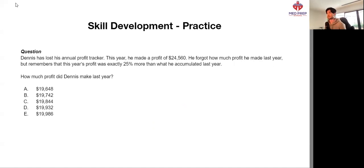Last but not least, another question with Dennis. Dennis has lost his annual profit tracker. This year, he made a profit of 24,560. He forgot how much profit he made last year, but remembers that this year's profit was exactly 25% more than what he accumulated last year. In other words, 24,560 is equal to 125%. 24,560 is equal to 1.25. And we are looking for what 1 equals.